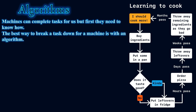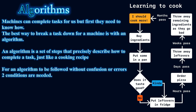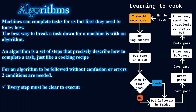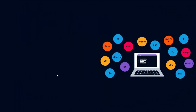Machines can complete tasks for us, but first they need to know how. The best way to break a task down for a machine is with an algorithm. An algorithm is a set of steps that precisely describes how to complete a task — just like a cooking recipe. For an algorithm to be followed without confusion or errors, two conditions are needed: every step must be clear to execute, and the steps must produce predictable outcomes based on the same inputs.